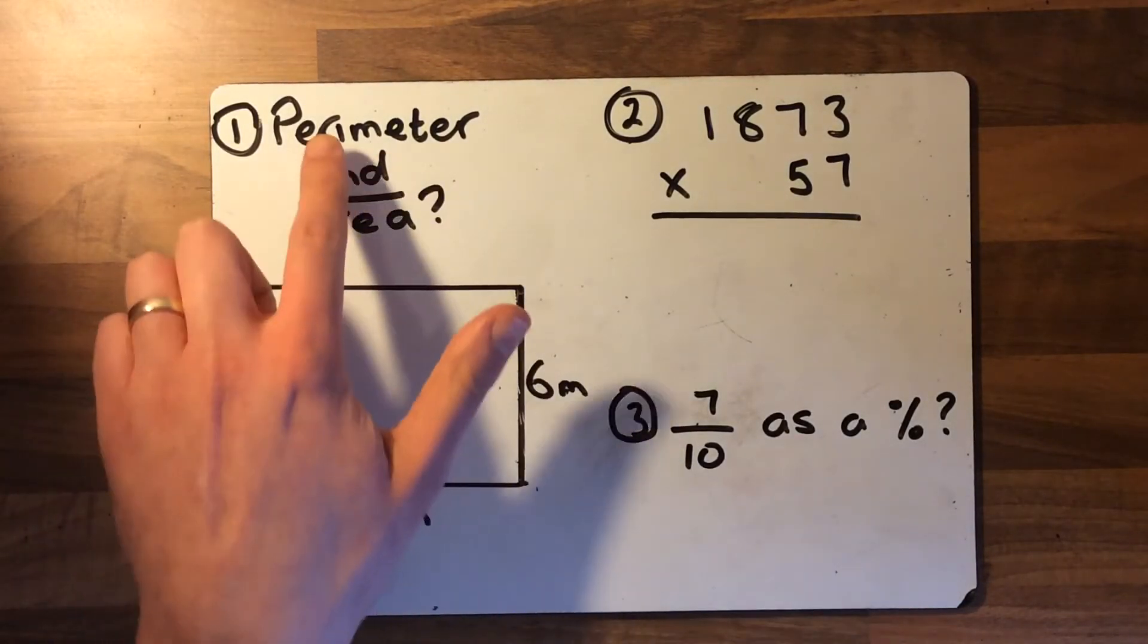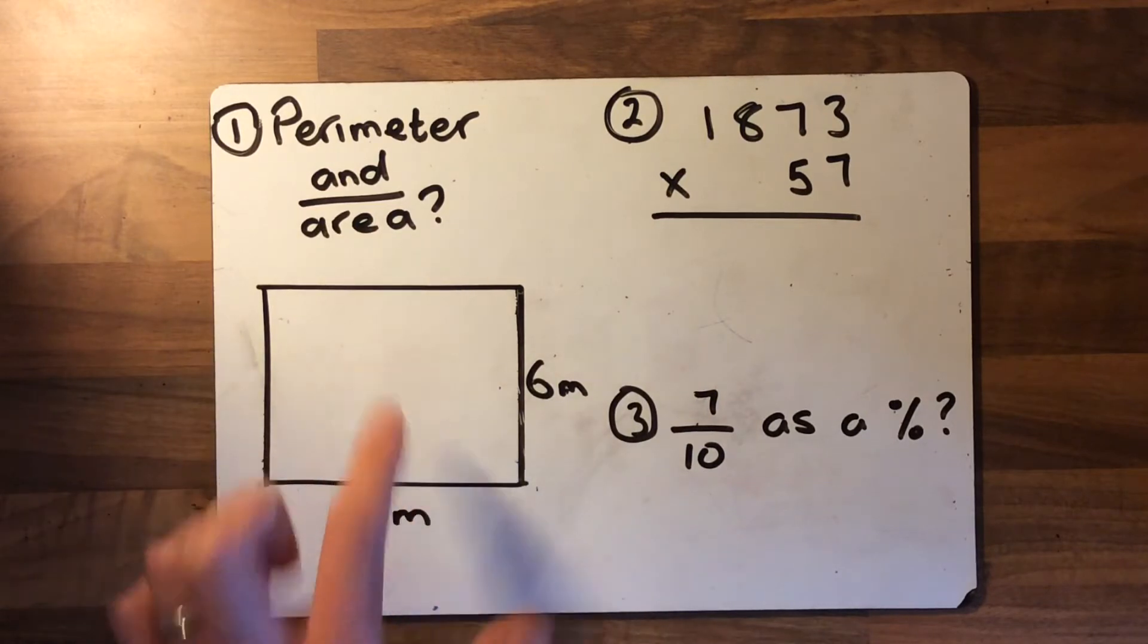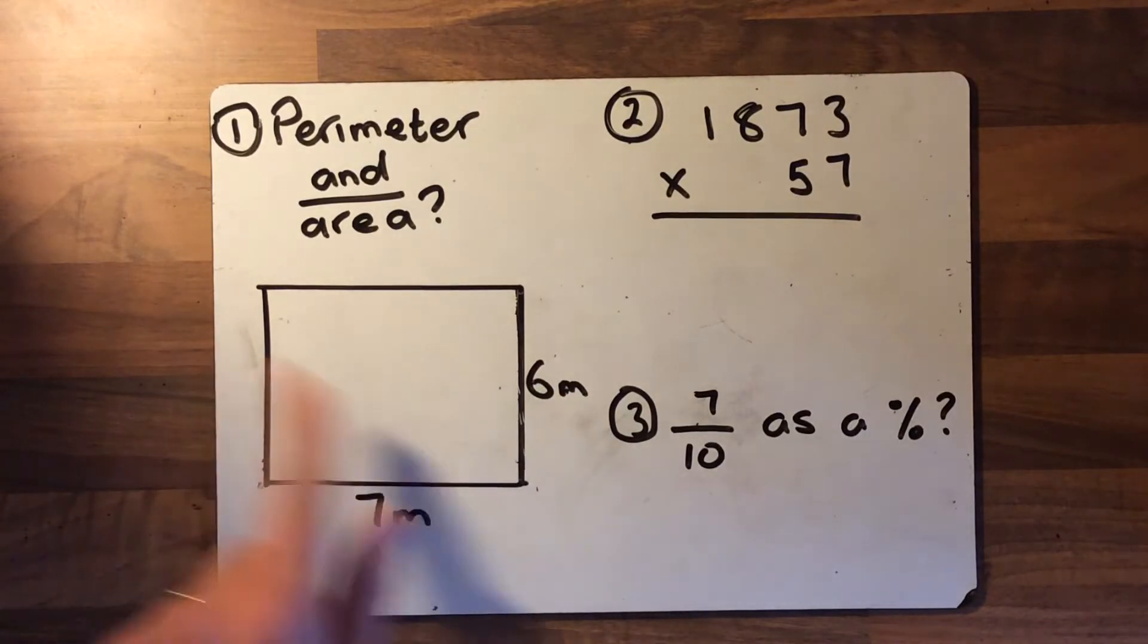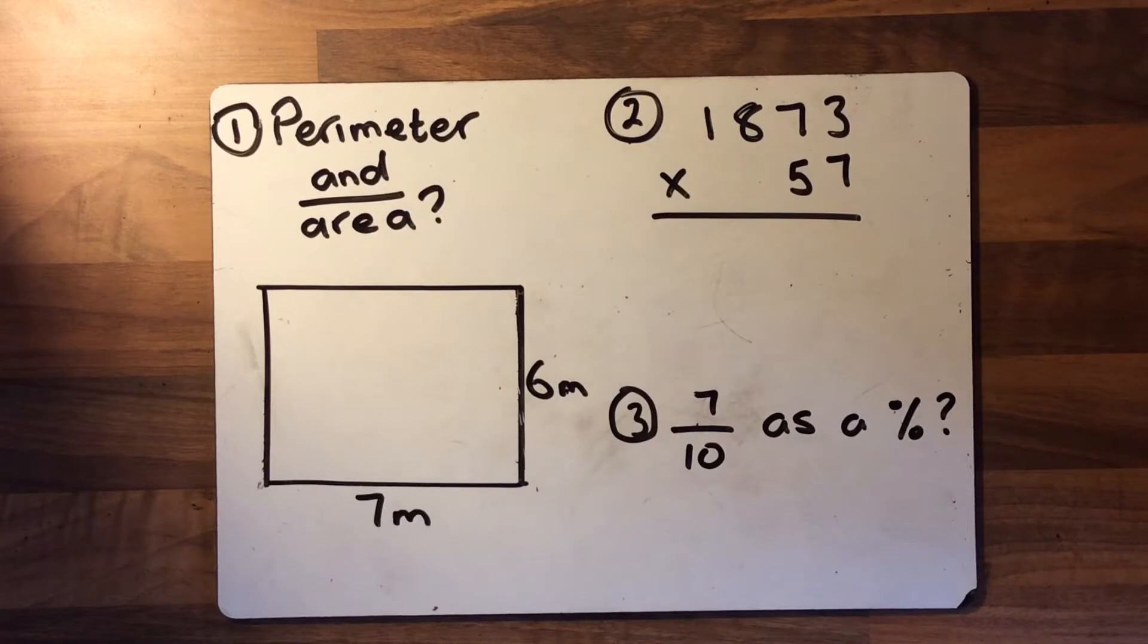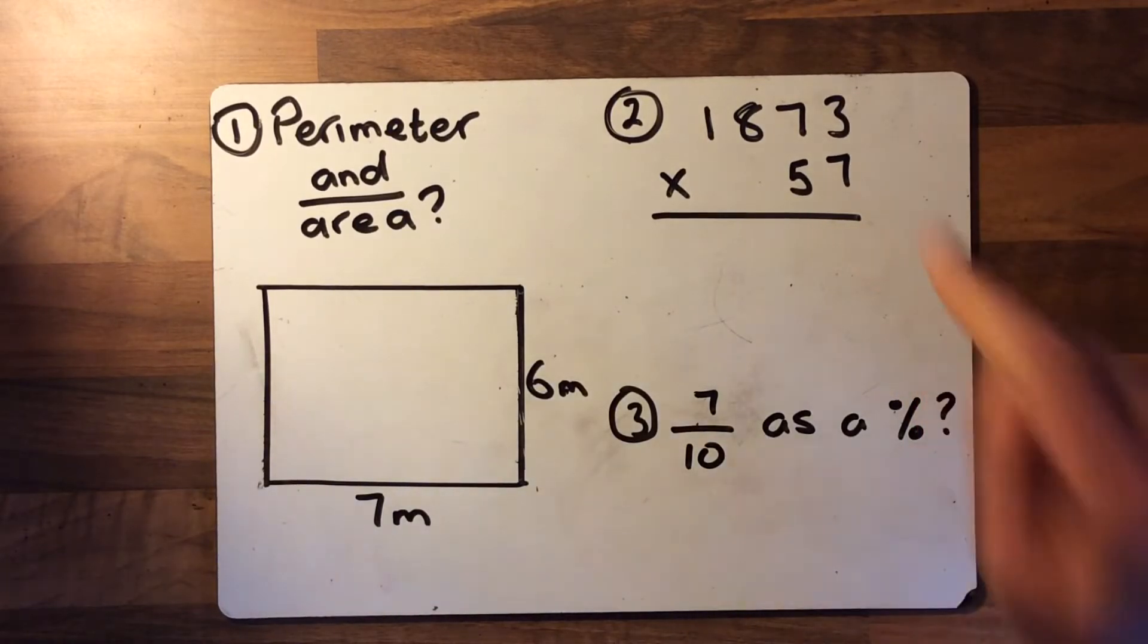So could you find the perimeter and the area of the shape of this rectangle? You need to find the perimeter, the distance around the edge, and the area, the number of squares within that shape for me please. And for number two,